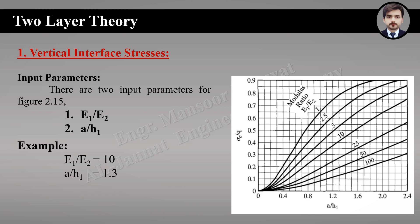To use Figure 2.15, consider an example where the modulus ratio equals 10 and the radius-to-thickness ratio equals 1.3. First, locate 1.3 on the axis, then move straight towards the line indicating modulus ratio 10. From that point, move straight to the left, and we get the vertical stress to tire pressure ratio equal to 0.41. We then simply put in the value of tire pressure to get the required vertical stress.